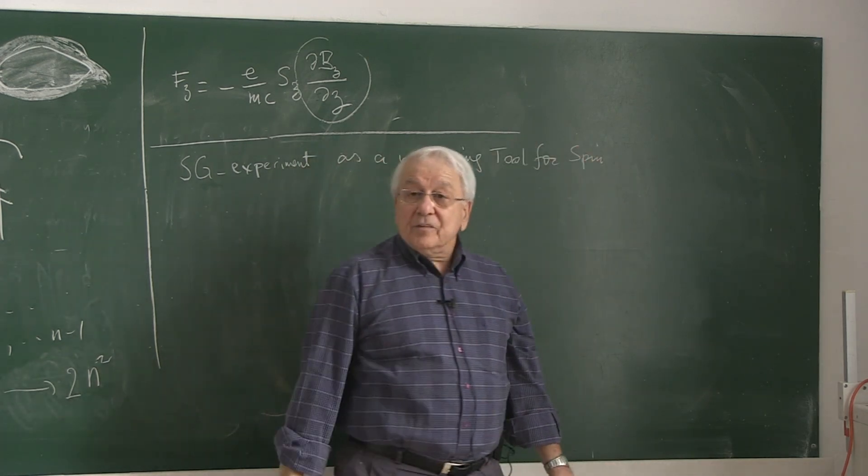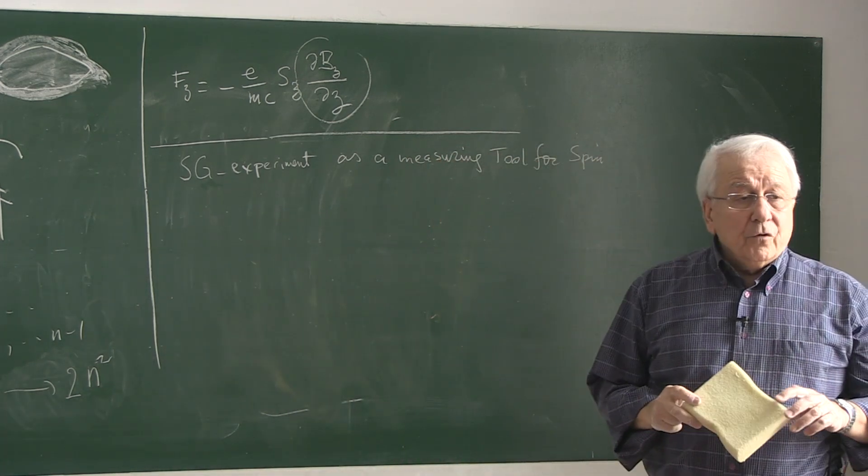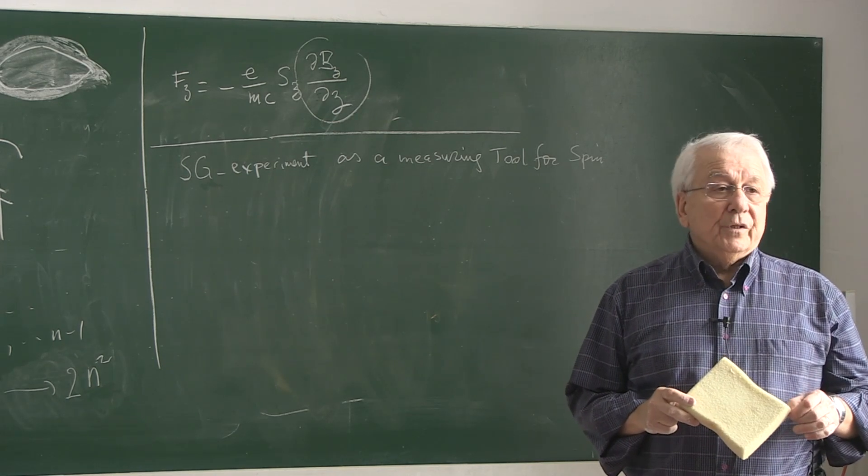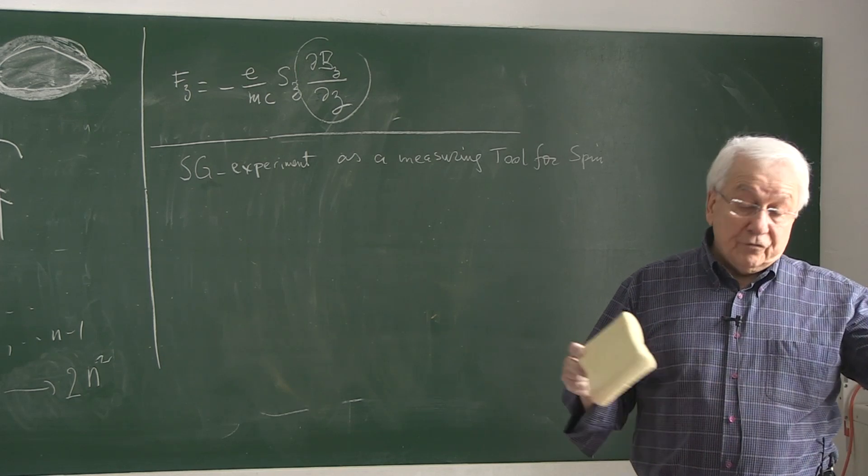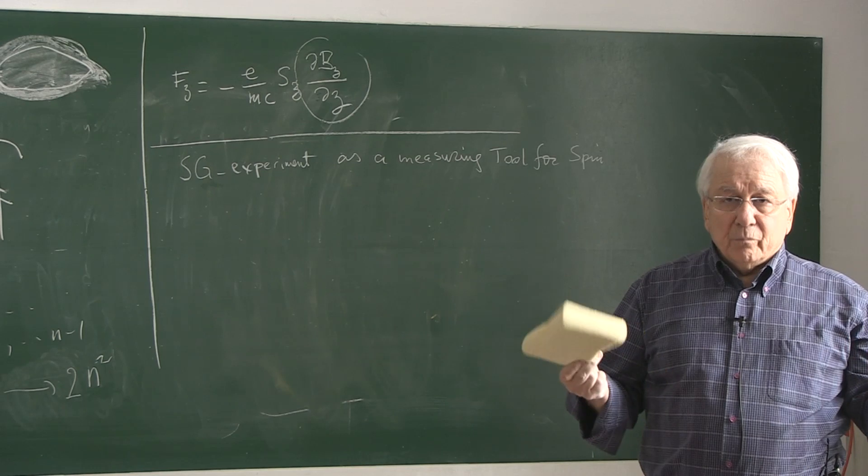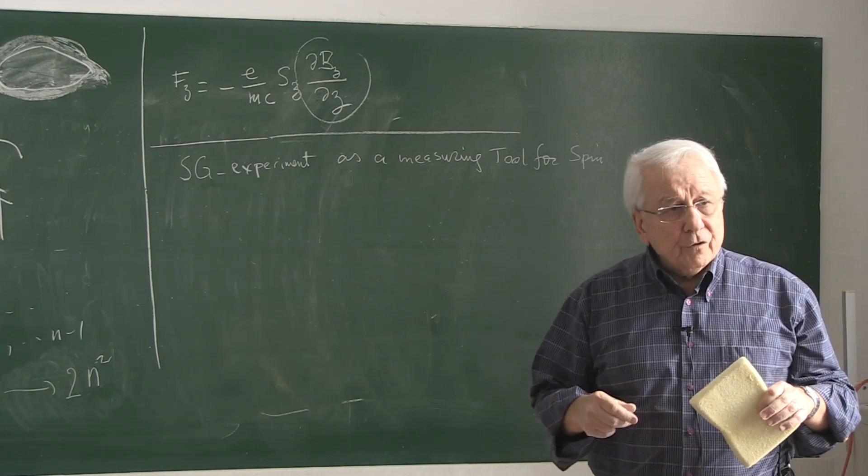Stern-Gerlach experiment as a measuring tool for spin. Isn't that amazing? So we have now a measurement tool. Notice that as we are in the micro world, we have to develop special tools for measurement. For example, you need accelerators to measure short distances in the atomic structure. They are the sort of new microscope. This may be also taken as a new measuring tool.